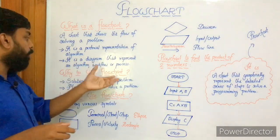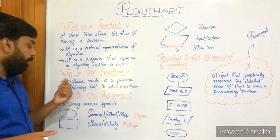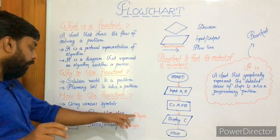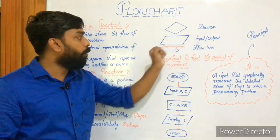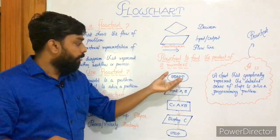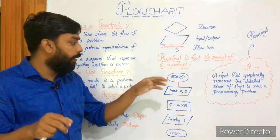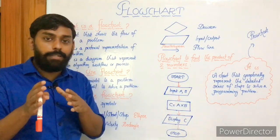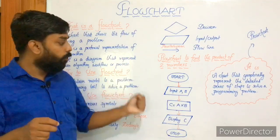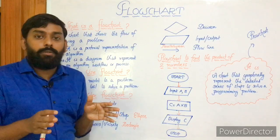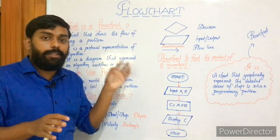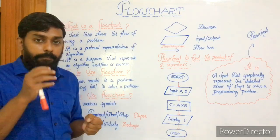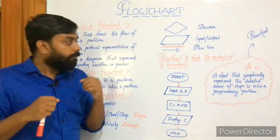Quick revision: flowchart is a chart that shows the steps to solve a programming problem. Formal definition: a chart that graphically represents the detailed series of steps to solve a programming problem. It is a pictorial representation of algorithm — algorithm is in textual format and flowchart is in graphical format. Why to use: it is a solution model to a programming problem and a planning tool. How to use: using various symbols — terminal, process, decision, input/output, and flow line.